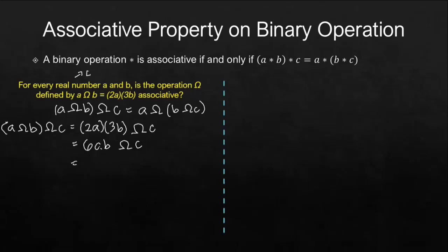If we're going to operate this, 6AB omega C, we have to take 2 times the first number. In this case, the first number is 6AB, and then times 3, and the second number which is C. 2 times 6 is 12AB. This will be multiplied to 3C. 12 times 3 is 36. A times B times C is ABC. So this is the answer for our left side of the equation.